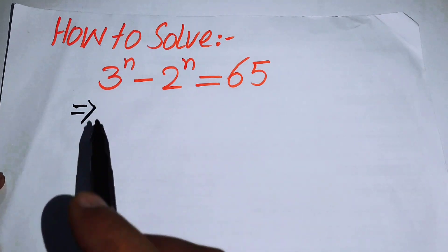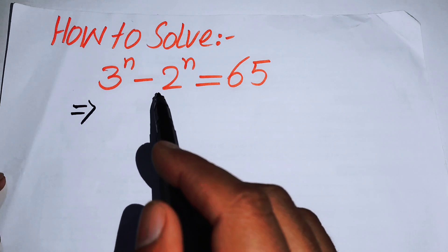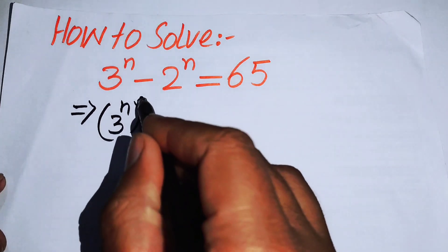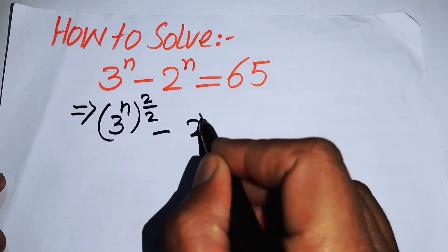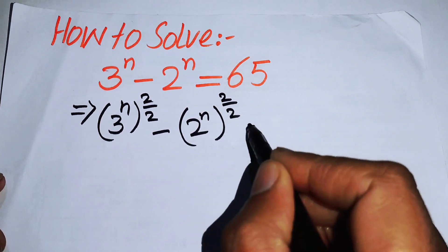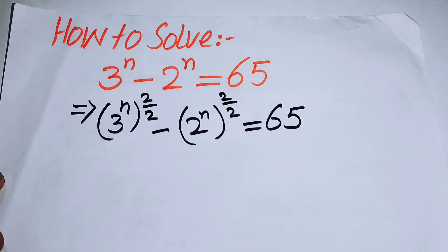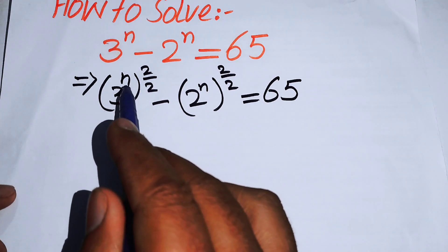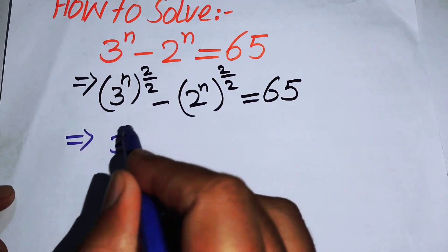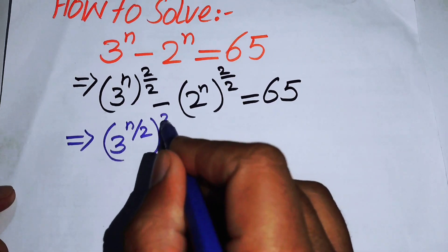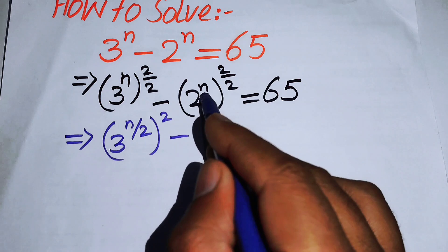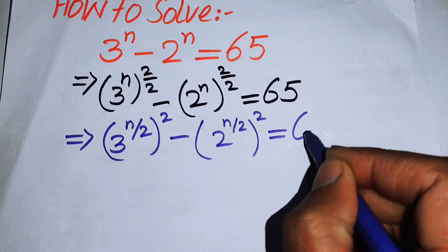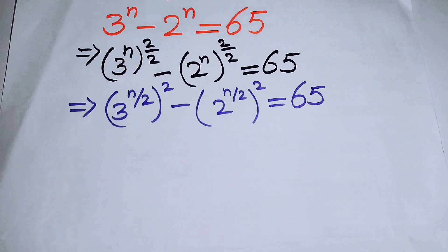The first thing we are going to do is multiply and divide both of the exponents by 2. So we write 3 to the power of n, with its whole power 2 over 2, minus 2 to the power of n with its whole power 2 over 2, equals 65. Simplifying, we get 3 to the power of n over 2, squared, minus 2 to the power of n over 2, squared, equals 65.